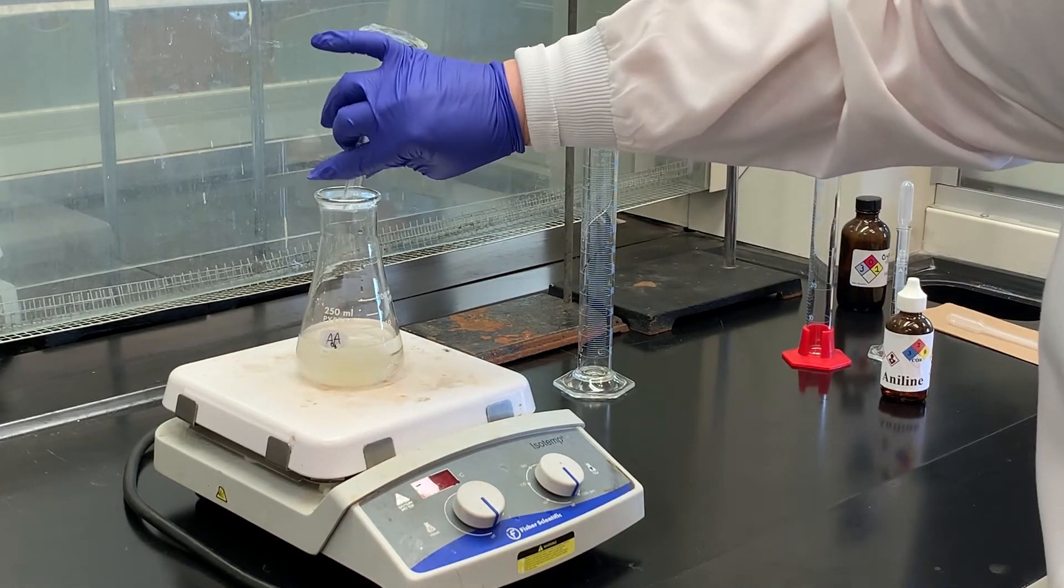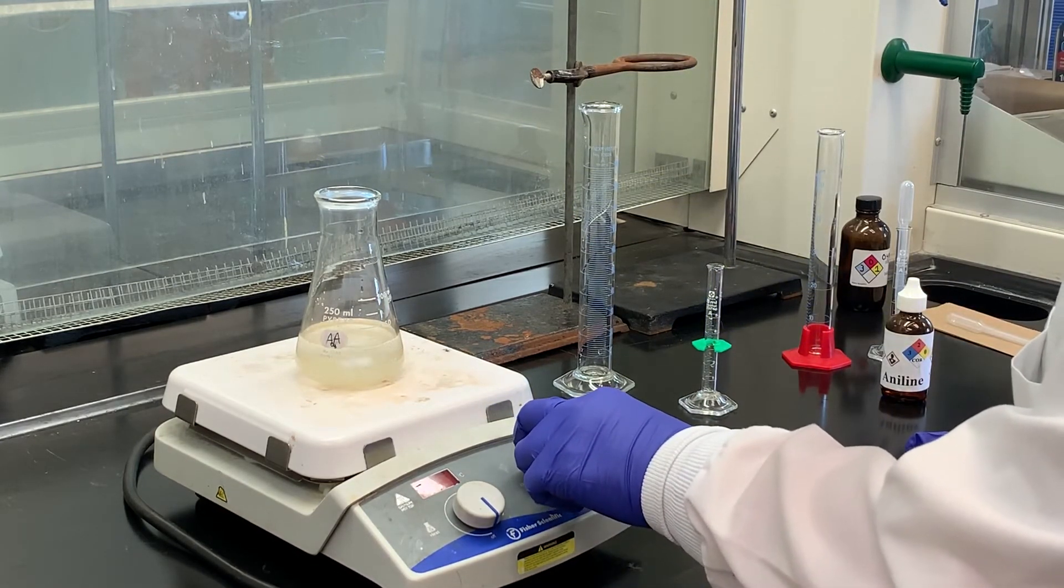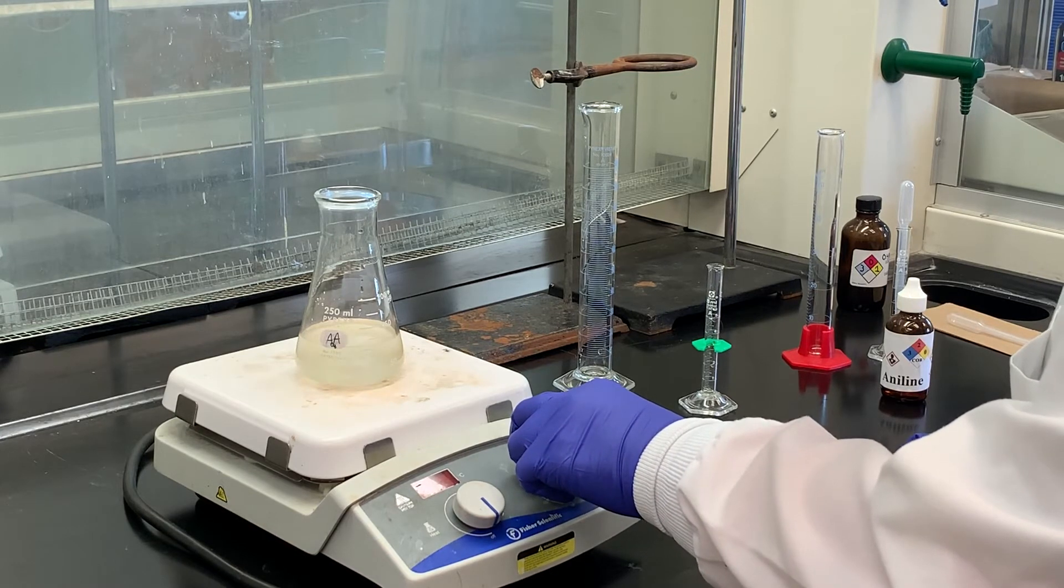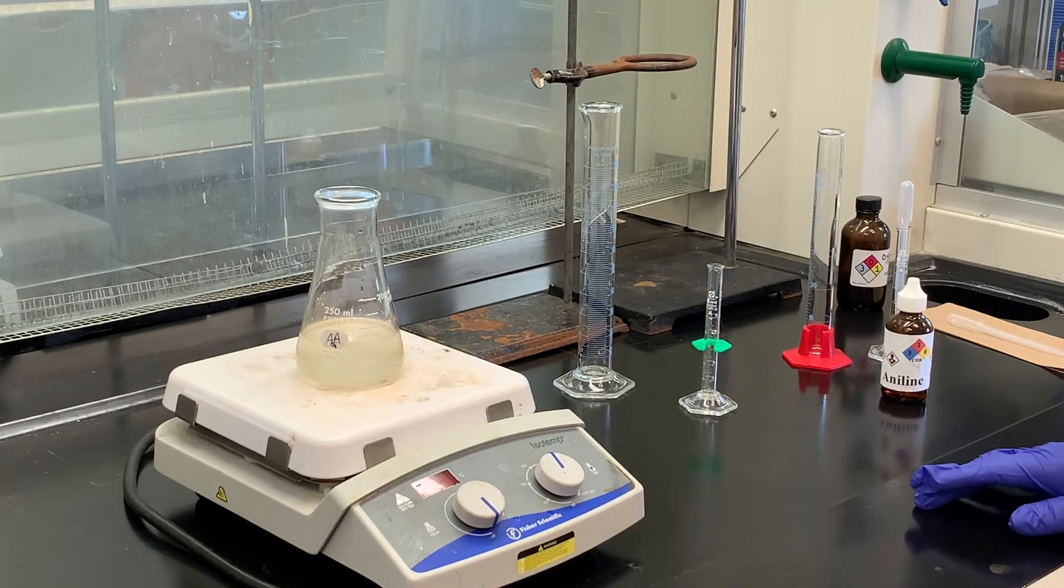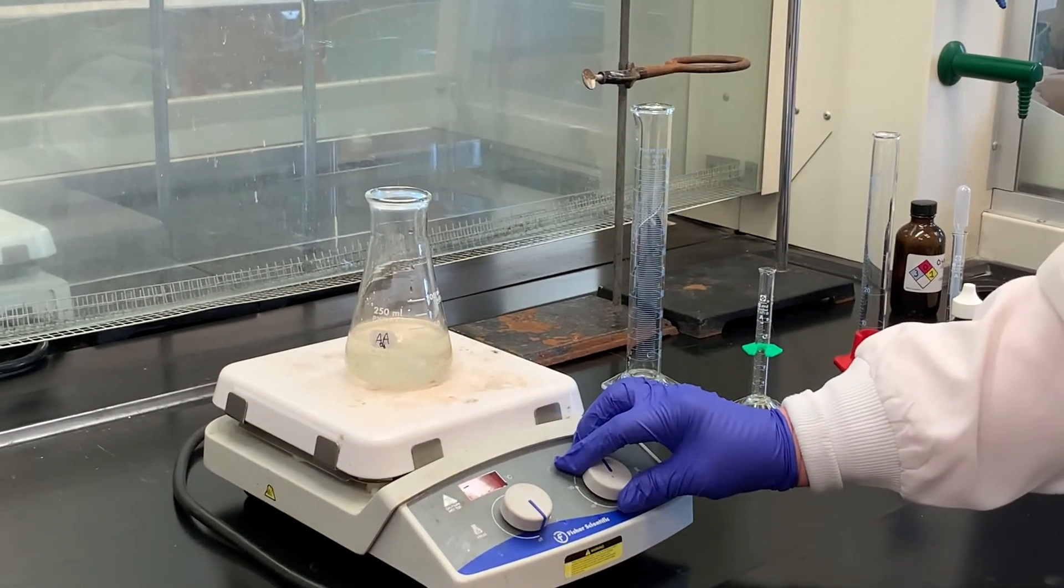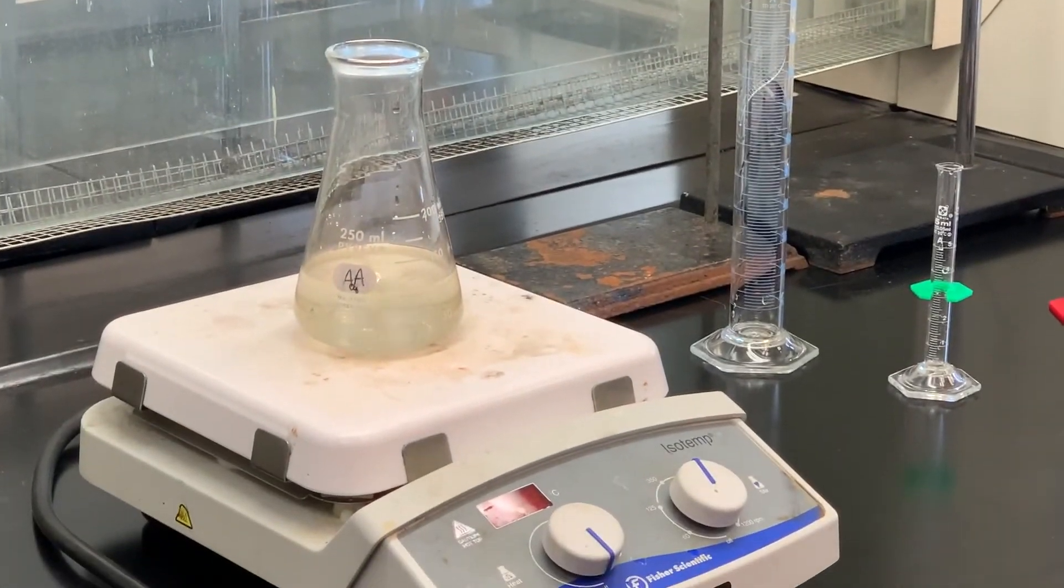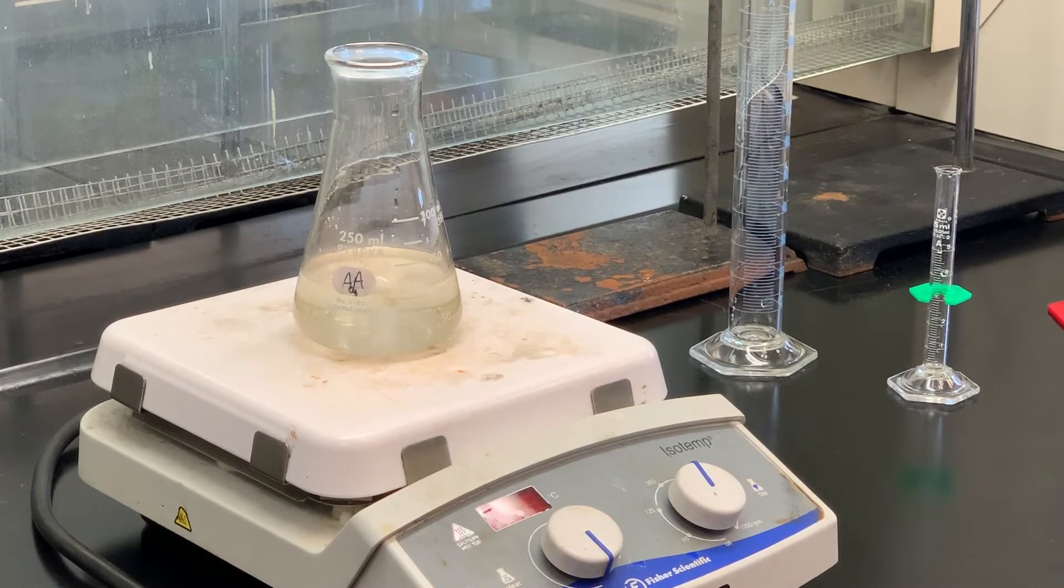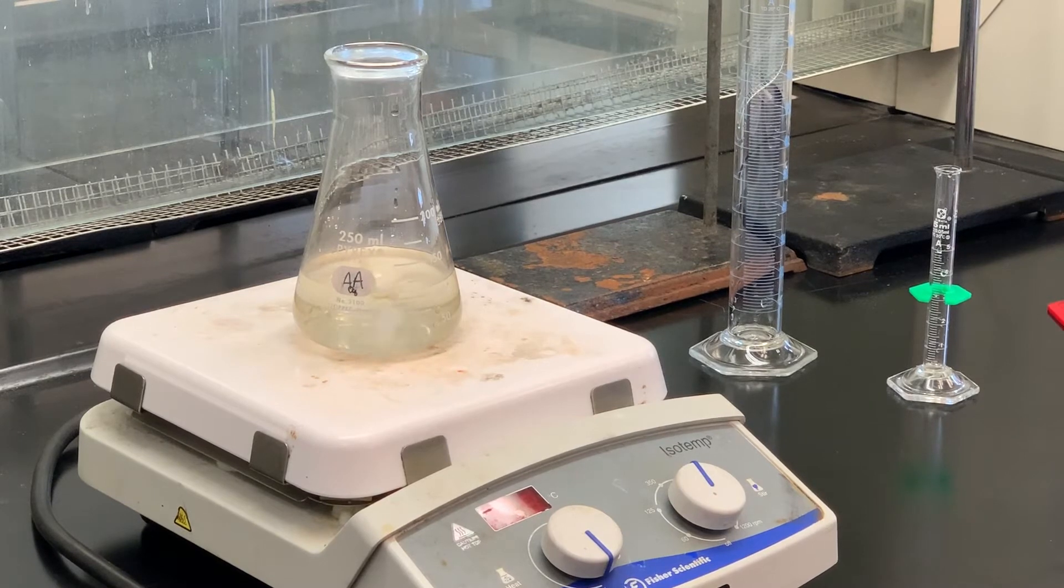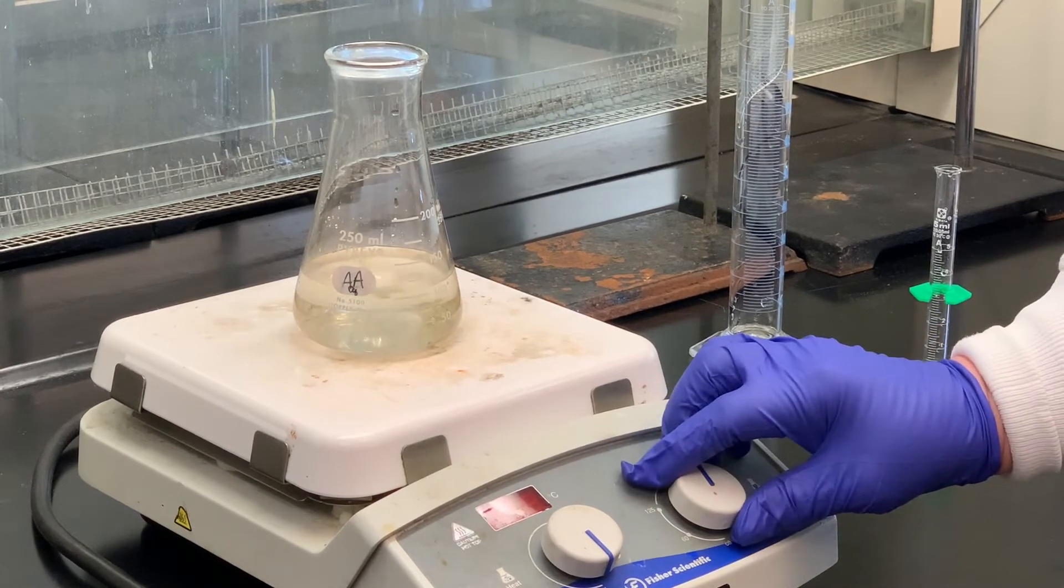I'm going to go ahead and add the 3.6 mils of aniline and then we're going to stir this up and we're also going to heat this to about 50 degrees. So I need to get a thermometer because we're going to heat this to about 50 degrees. Once we're at 50 degrees we're going to add the acetic anhydride all in one portion. We'll add the solution of the sodium acetate trihydrate in one solution and then after that we'll chill it in an ice bath. So this isn't a very long procedure.